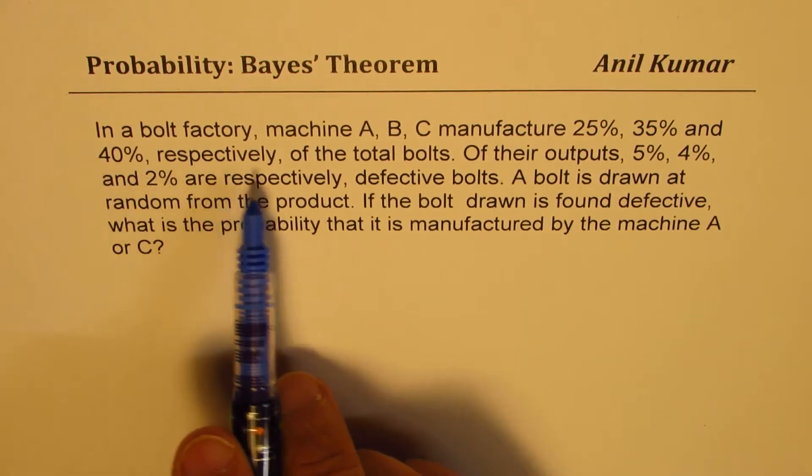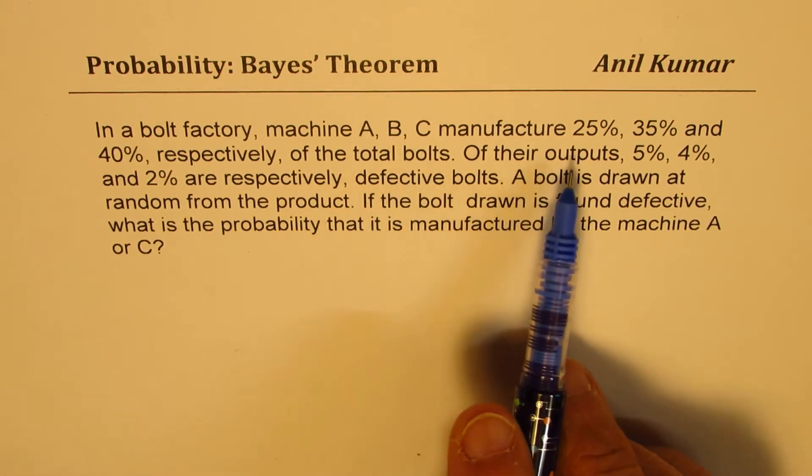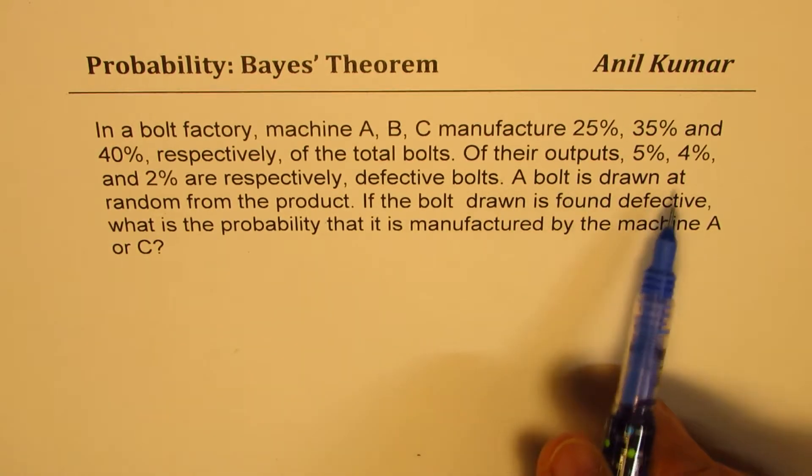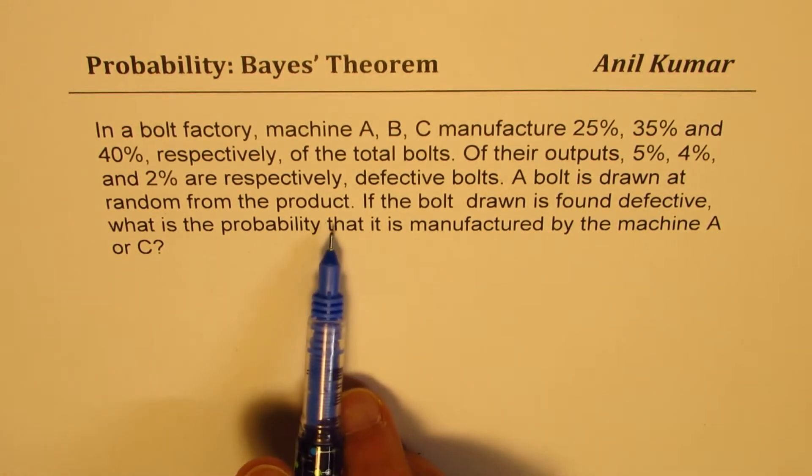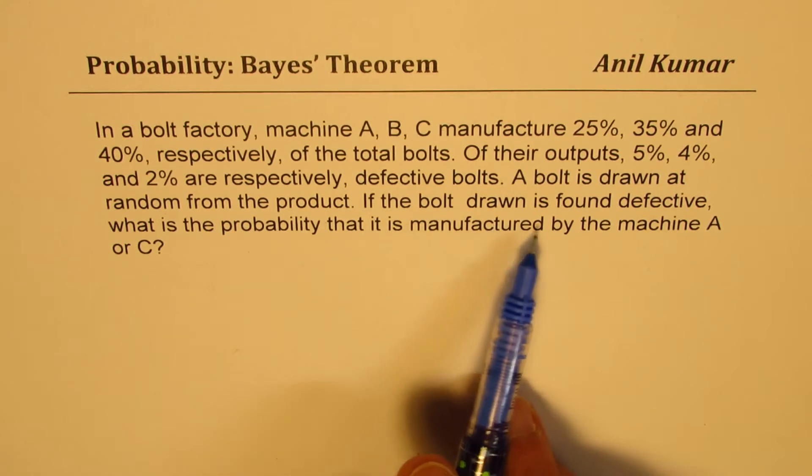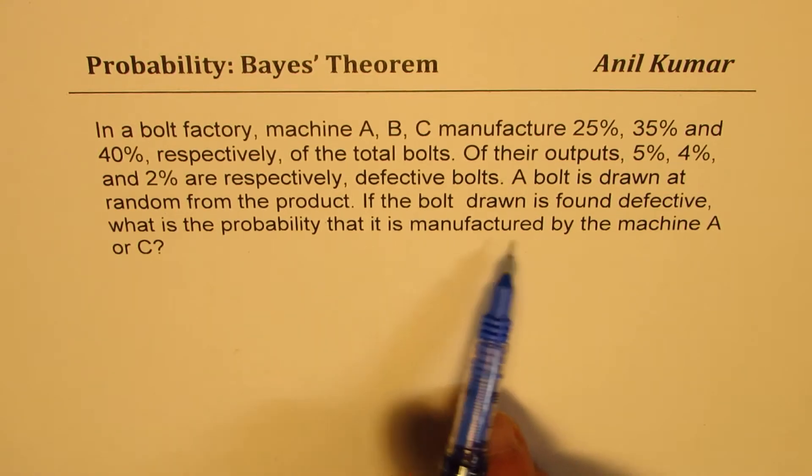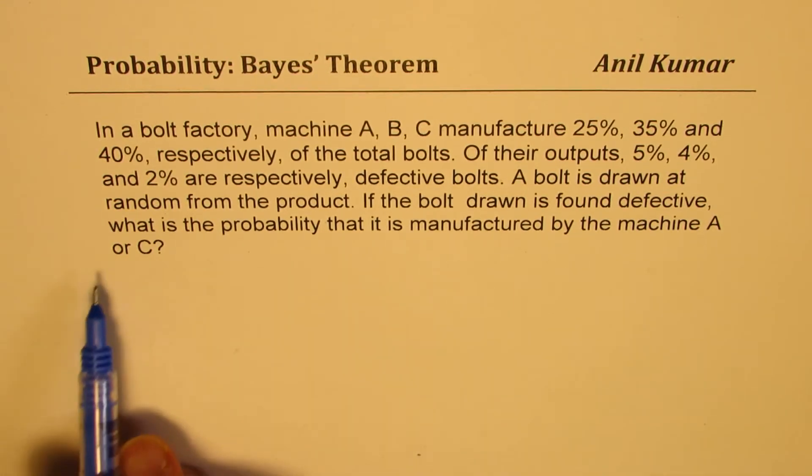In a bolt factory, machines A, B, and C manufacture 25%, 35%, and 40% respectively of the total bolts. Of their outputs, 5%, 4%, and 2% are respectively defective bolts. A bolt is drawn at random from the product. If the bolt drawn is found defective, what is the probability that it is manufactured by machine A or C? So that's the question for you.